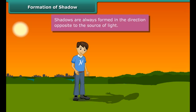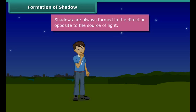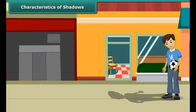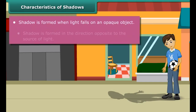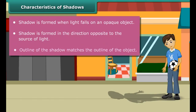You are confused and want to understand when shadows are formed and in which direction. Shadows are formed when an opaque object is placed across the path of light. Shadows can be seen only on a screen — the ground, walls of a room, buildings, and other such surfaces act as screens for shadows. Shadows are always formed in the direction opposite to the source of light.